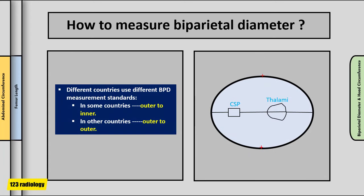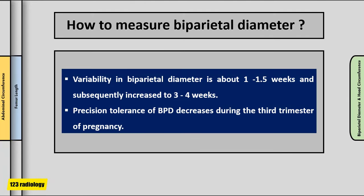It is important to note that different countries use different biparietal diameter measurement standards. Some countries measure outer to inner — from the outer edge of the proximal parietal bone to the inner edge of the distal parietal bone — while others measure outer to outer. The variability in biparietal diameter is about 1 to 1.5 weeks, subsequently increasing to 3 to 4 weeks. The precision of biparietal diameter decreases during the third trimester of pregnancy.